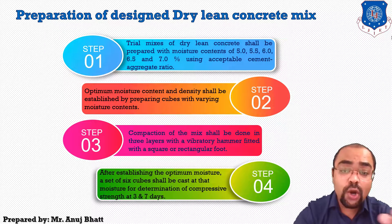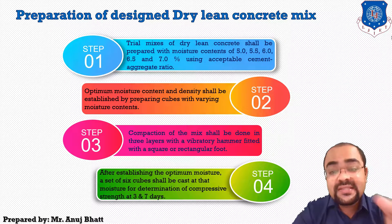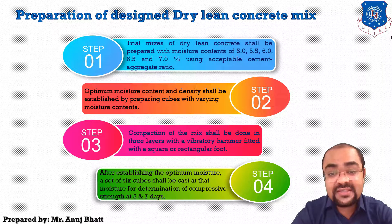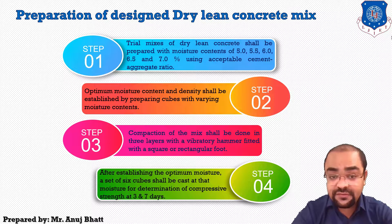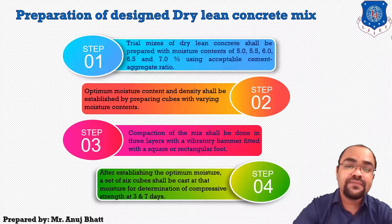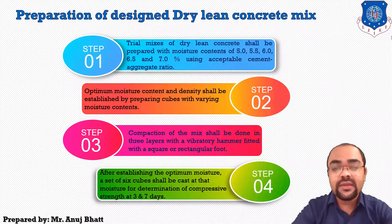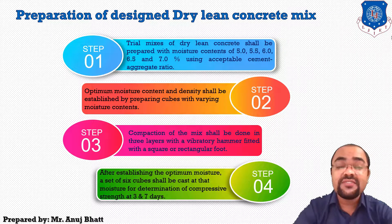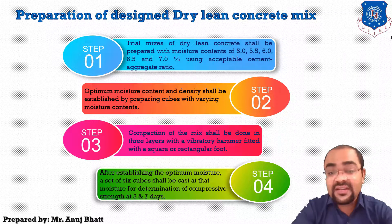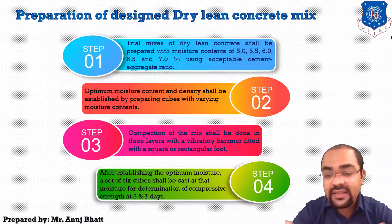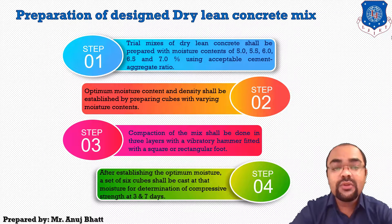After establishing the optimal moisture content and compaction, a set of six cubes shall be cast to determine compressive strength at three days and seven days. The trial mixture shall be repeated if the strength is not satisfactory — either by increasing the cement content or by using a higher grade of cement. If you are not getting proper strength at three or seven days, you must increase the cement content or increase the grade of cement in that particular mix.